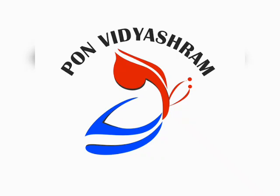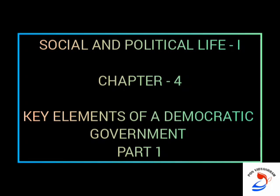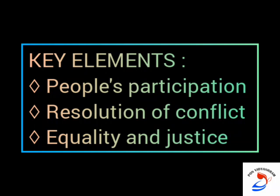Shri Guru Piyo Namaha. This is Hemalata from Panavidya Ashram. Today's session is from Social and Political Life 1, Chapter 4: Key Elements of a Democratic Government. In this chapter, we'll read about some of the key elements that influence the working of a democratic government. These include people's participation, the resolution of conflict, and equality and justice.